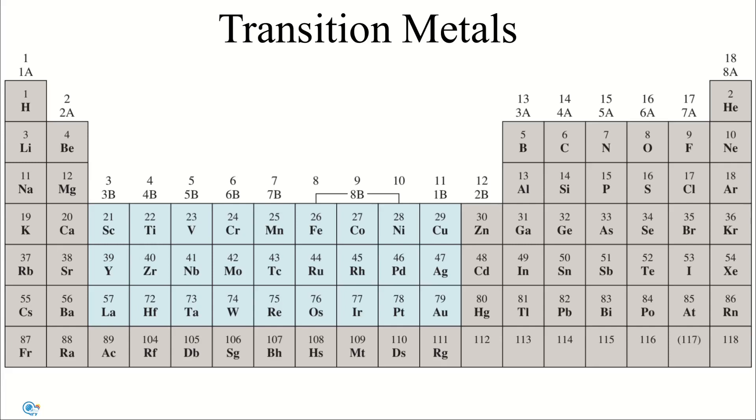Although the transition metals are less electropositive or more electronegative than the alkali and alkaline earth metals, the standard reduction potentials suggest that all of them except copper should react with strong acids such as hydrochloric acid to produce hydrogen gas.